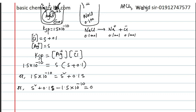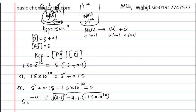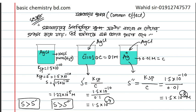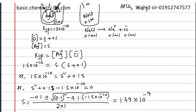Now if we want to find s using the quadratic formula: minus b plus or minus root over b squared minus 4ac, divided by 2a. Here a equals 1, c equals minus 1.5 into 10 to the power minus 10. After calculation, the result is 1.49 into 10 to the power minus 9. Using the shortcut technique, we got approximately 1.5 into 10 to the power minus 9. The detailed calculation gives 1.49 into 10 to the power minus 9.